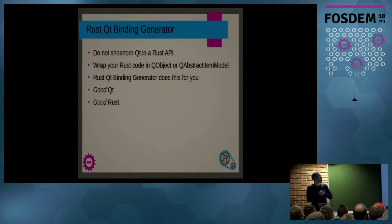So, in conclusion. If you want to combine Rust and Qt, you should not, in my opinion at least, shoehorn the whole of Qt into a Rust API. But instead, you should wrap your Rust code in a Qt object or a Qt abstract item model, which you can then naturally use in your Qt or QML application. And by doing that, and you don't actually have to do it yourself, because the Rust Qt binding generator does it for you, you get good Qt code and good Rust code. That's it.